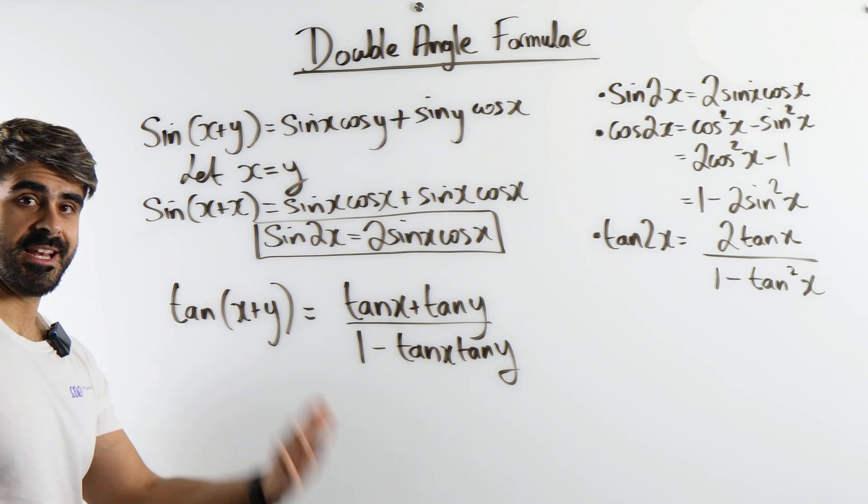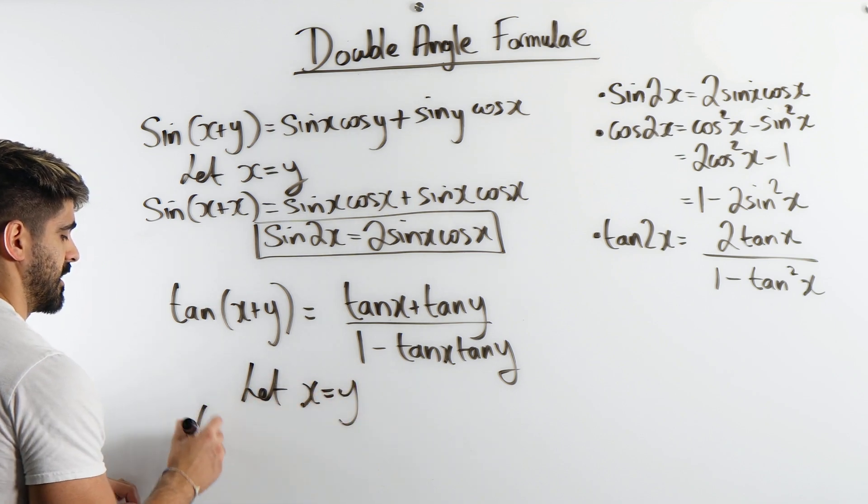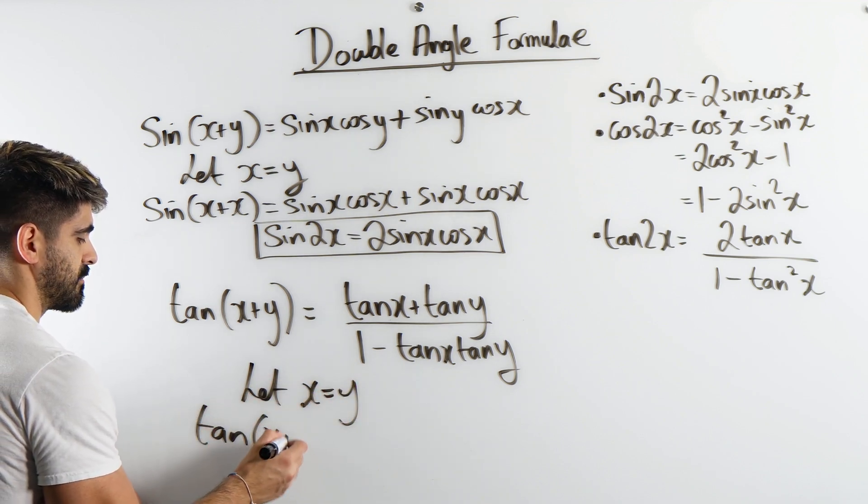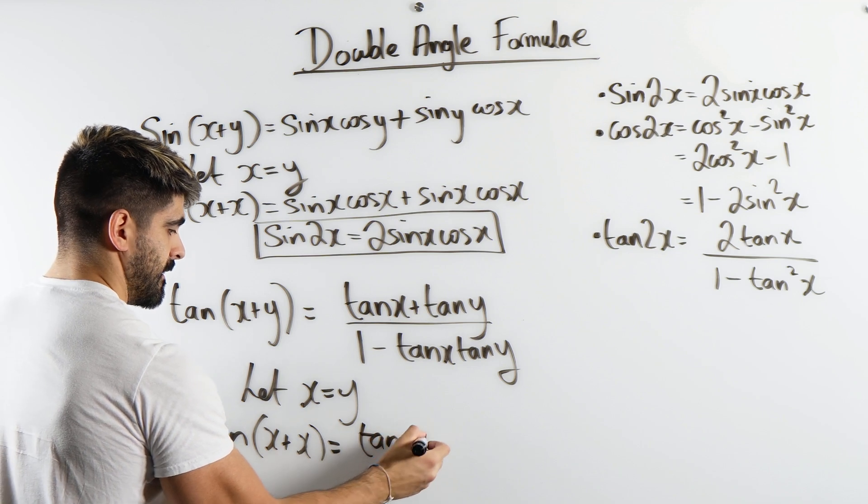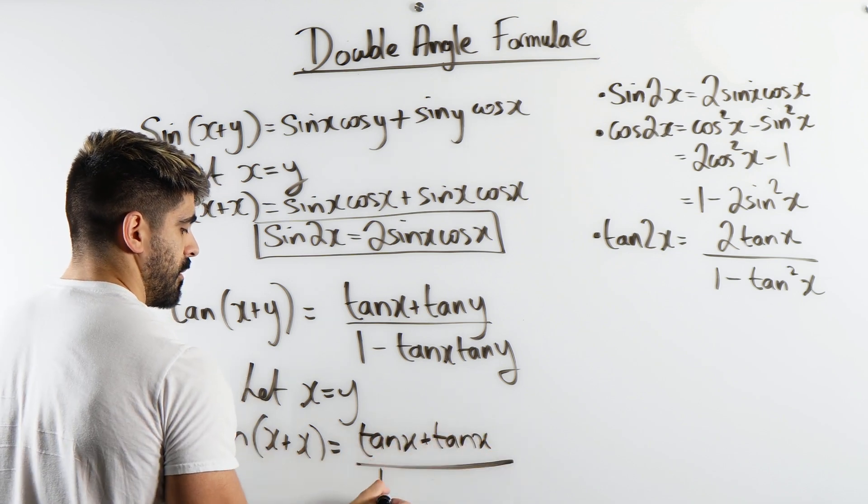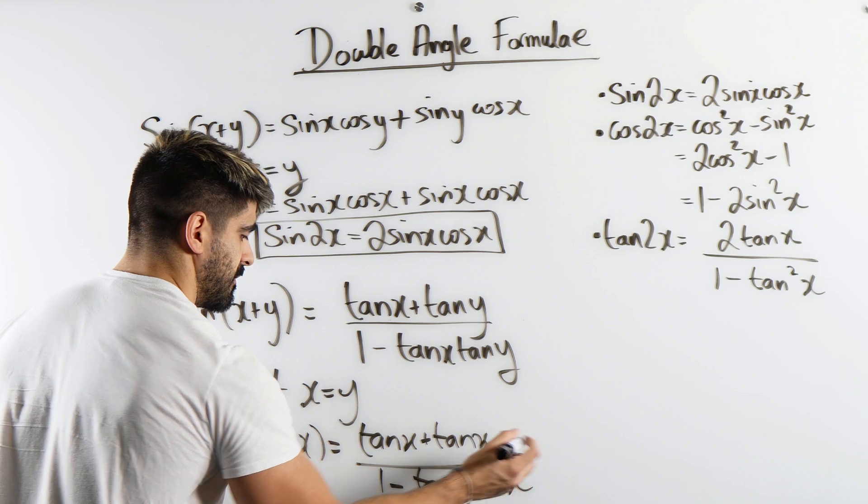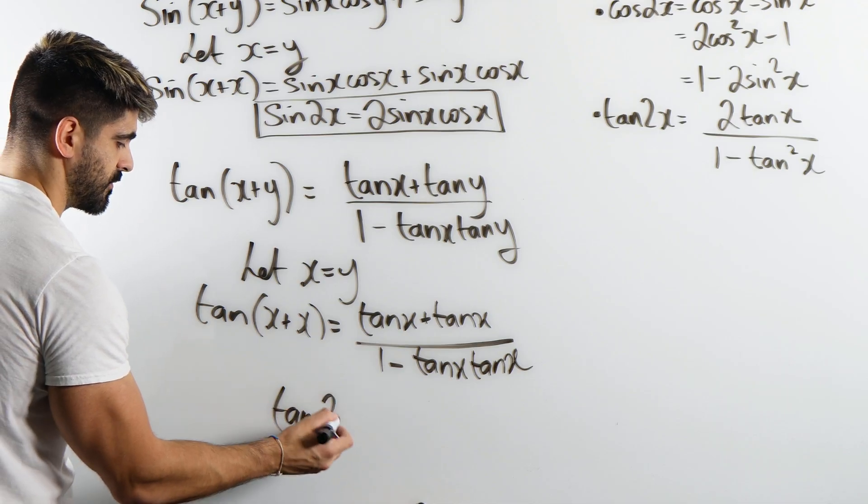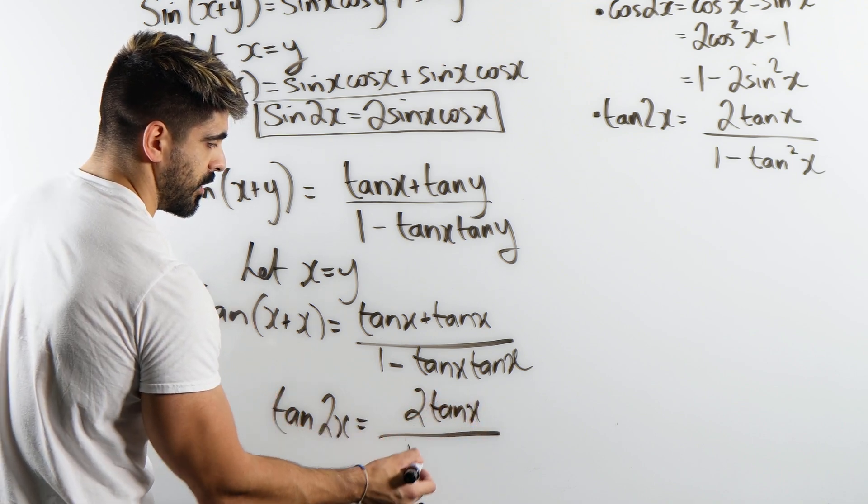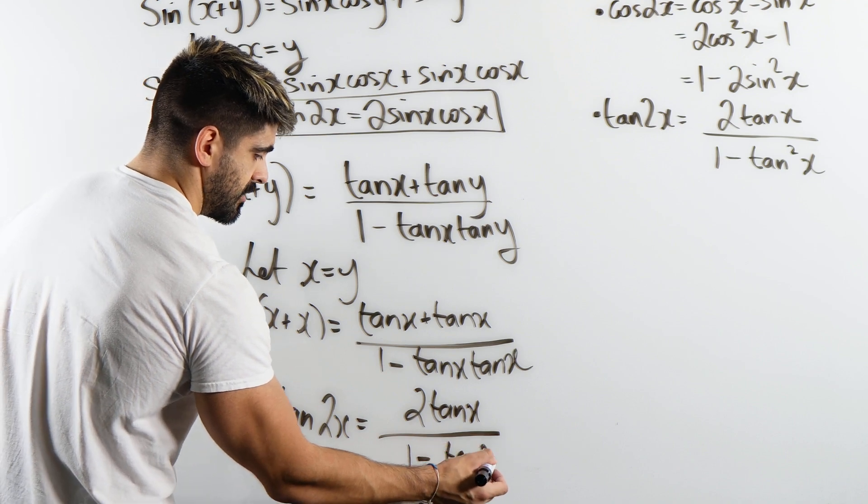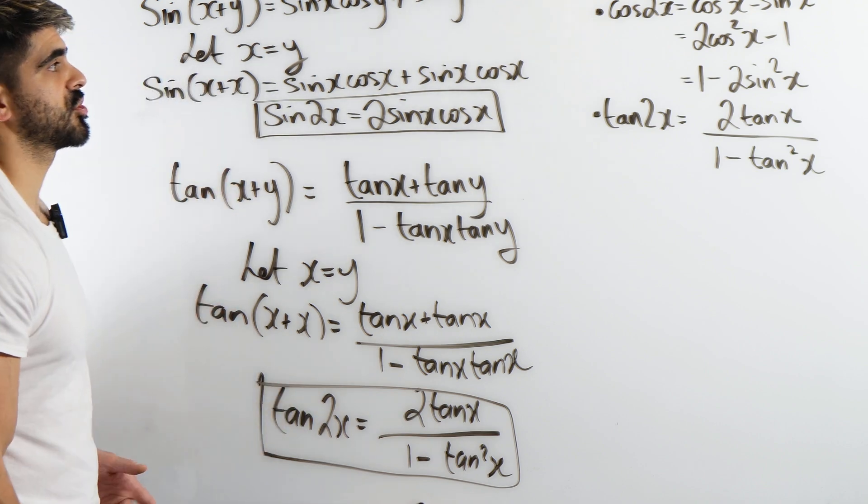Okay, now again we're just going to let x equal y. Okay, so let x equal y, we get tan of x plus x is tan x plus tan x, all divided by 1 minus tan x times tan x. Let me simplify that. So we get tan of 2x is 2 tan x over 1 minus tan squared x. And that is the first two shown.